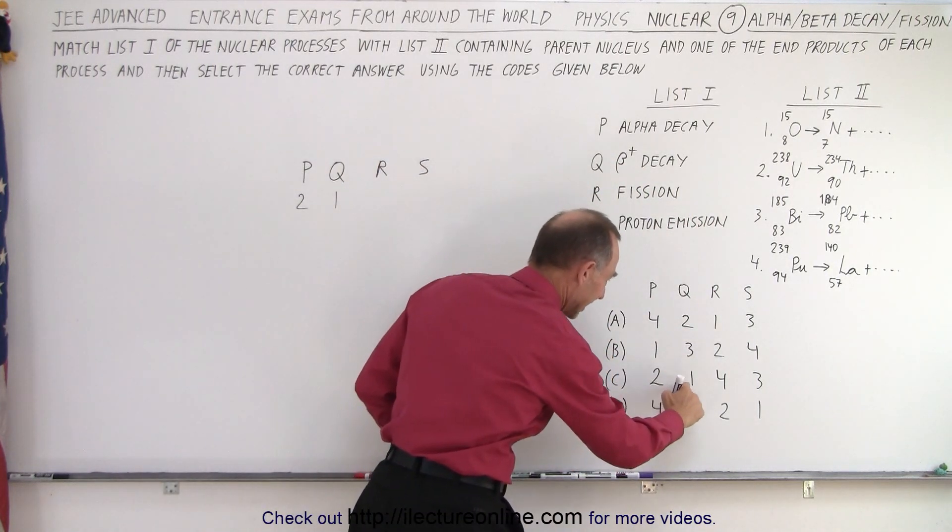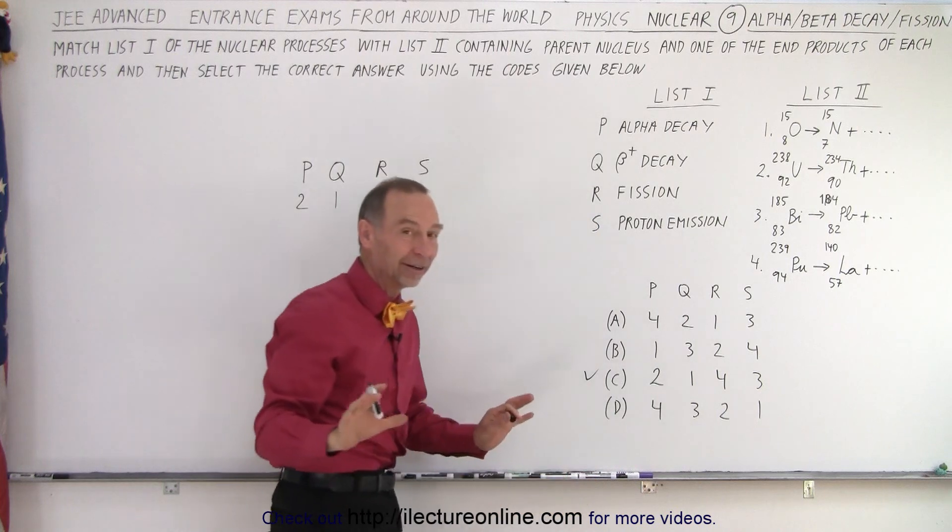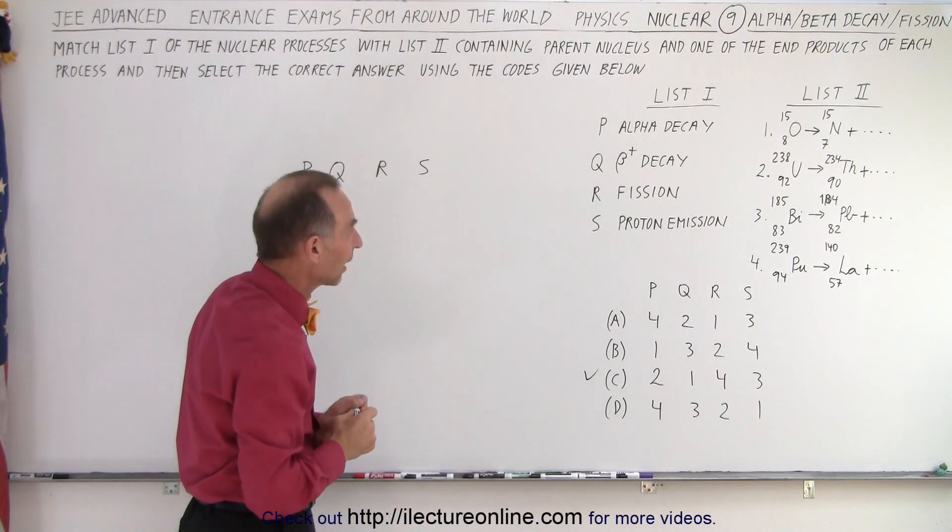So I would say that in this case 1 pairs up with Q so Q is equal to a 1. Now let's go and check to see if we're still correct. Yes, indeed. So far answer C seems to be holding steady. All right, next.